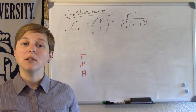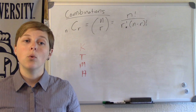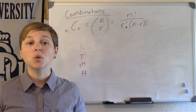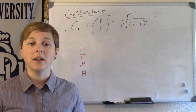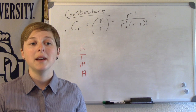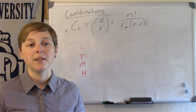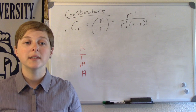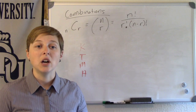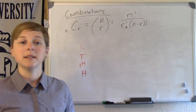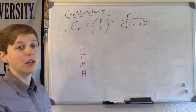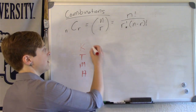This time, assume that order does not matter, so it doesn't matter which person is selected first and who is selected second. All that matters is whether or not they got selected to be part of my favorites. A tree diagram may be helpful to illustrate all the different possibilities.